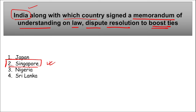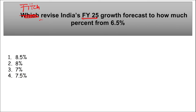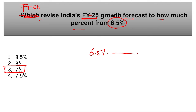Fitch, the international credit rating agency, revised India's fiscal year 2025 GDP growth forecast upward to 7%, from an earlier projection of 6.5% — an increase of 0.5 percentage points.